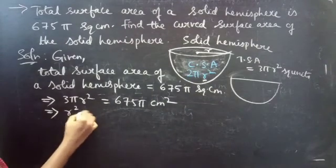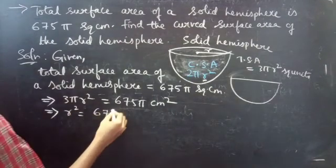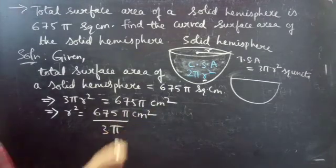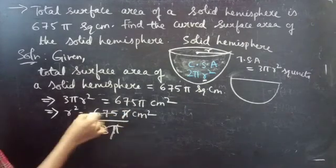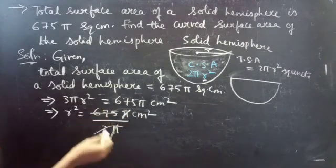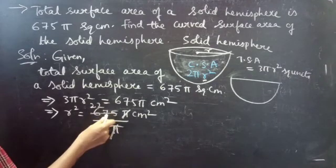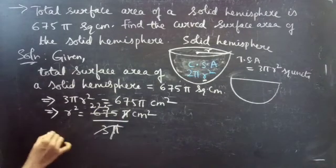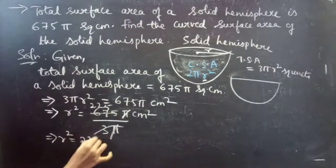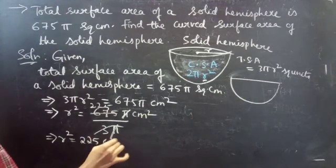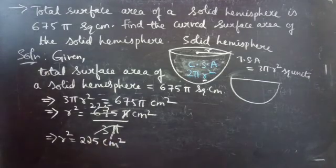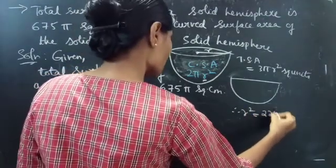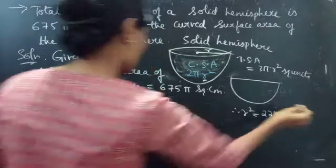So here we get r square equals 675 pi divided by 3 pi. The pi cancels, giving r square equals 675 divided by 3, which equals 225 centimeters square. So r square equals 225 centimeters square.